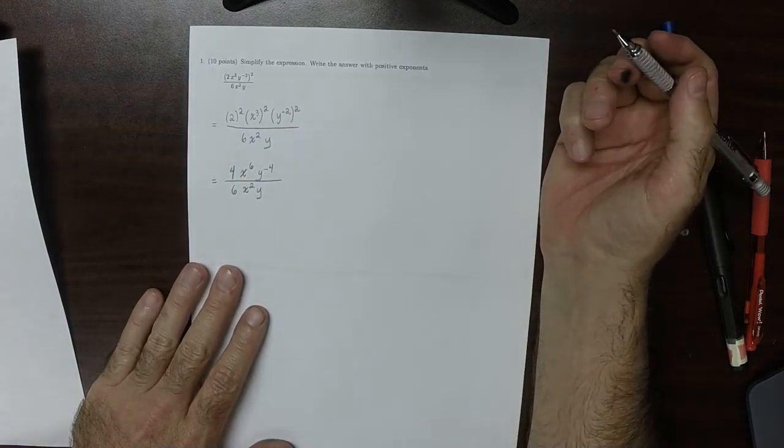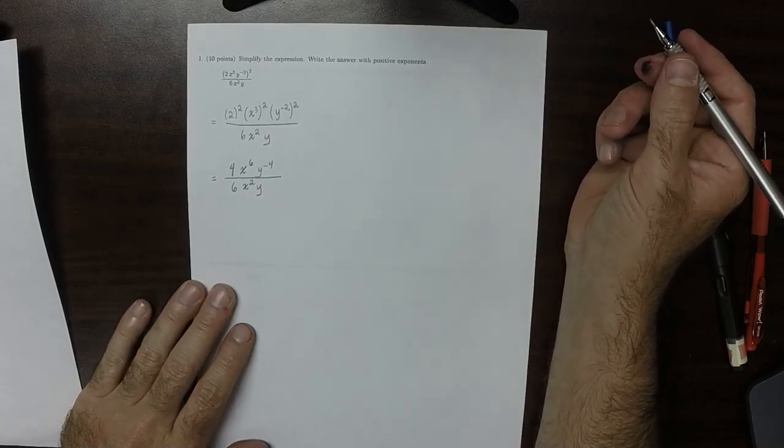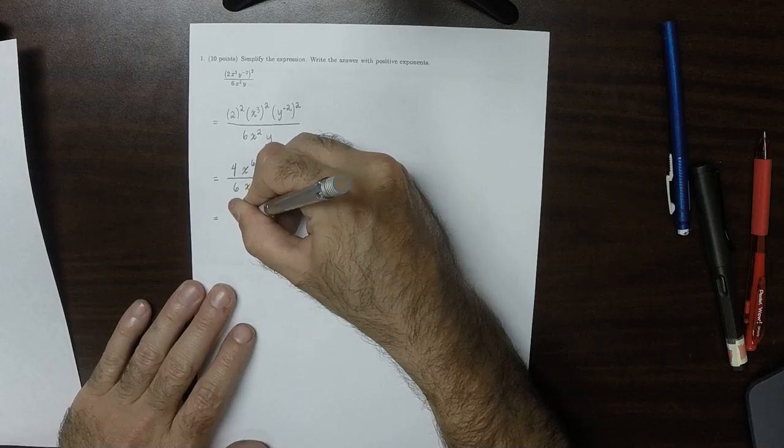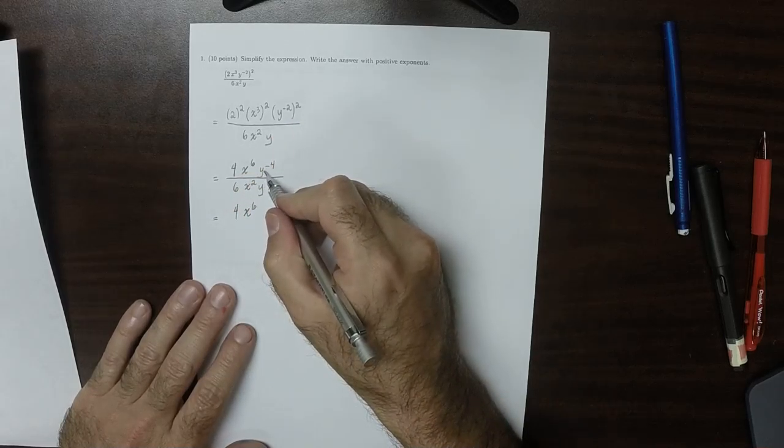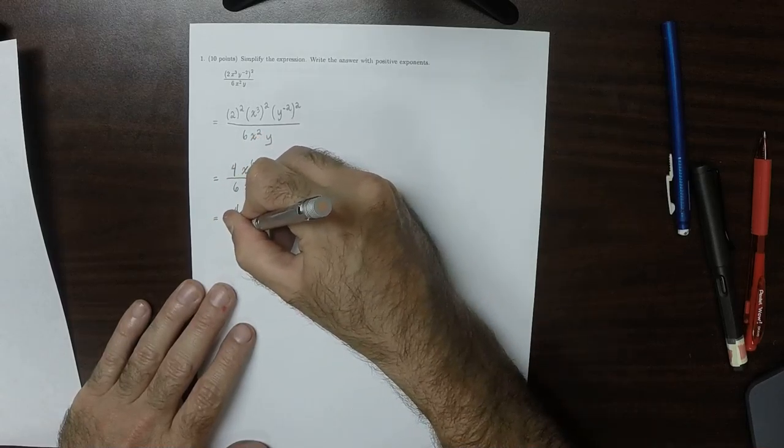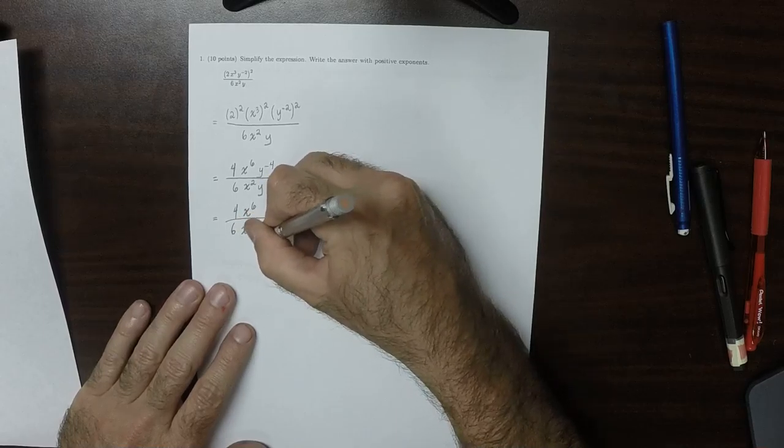So now, one of the instructions is use only positive exponents. So, 4x to 6. And then to make this positive, we can move it down to the denominator. So then that would be 6x squared y, y to 4.